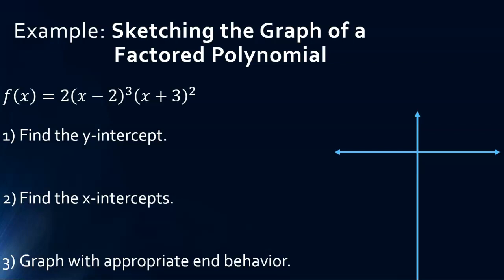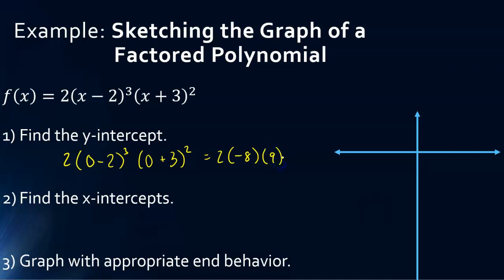Let's try doing this one together. We have 2 times the quantity x minus 2 cubed times x plus 3 squared. Let's start by finding the y-intercept — we're going to replace x with 0. So 0 minus 2 is negative 2, and negative 2 cubed is negative 8. And 0 plus 3 is 3, and 3 squared is 9. Multiplying those together with the 2 out front gives us a y-intercept of negative 144.